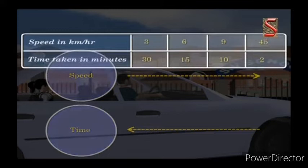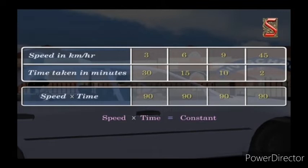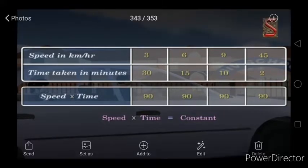In direct proportion, both items were increasing or both were decreasing. But here it is the opposite. When speed is increasing, time is decreasing. Speed is 3 km/hr and time is 30, so 3 × 30 = 90. Speed × time is constant: 15 × 6 = 90, 10 × 9 = 90, 45 × 2 = 90. So the distance covered is the same, because distance = speed × time. As speed increases, time taken gets less.